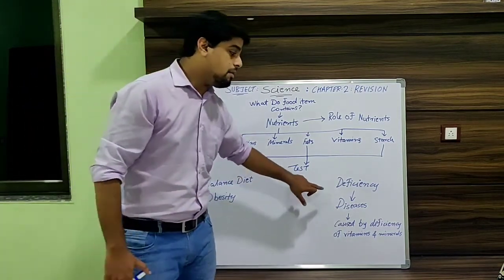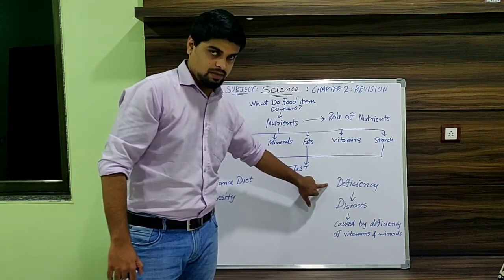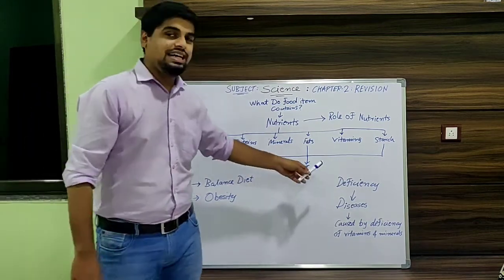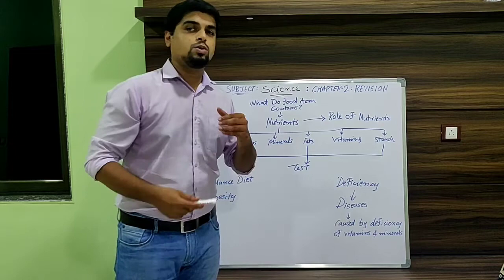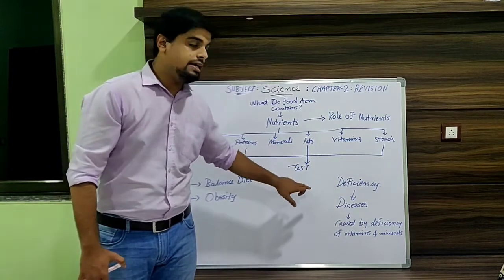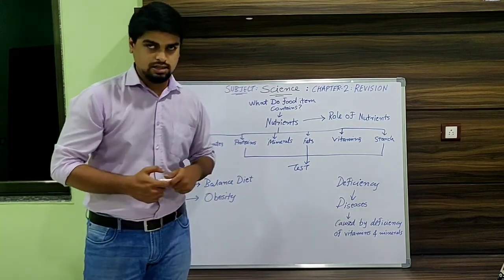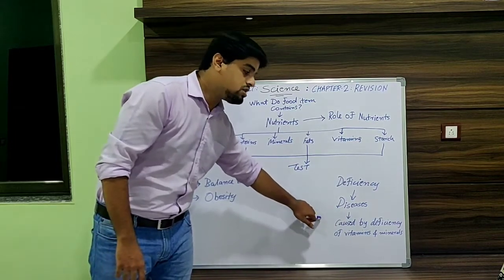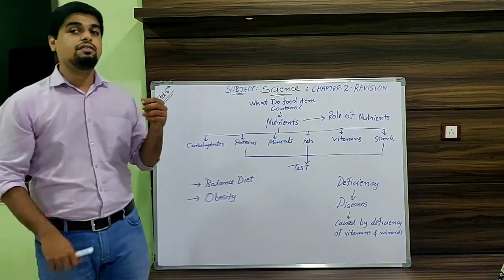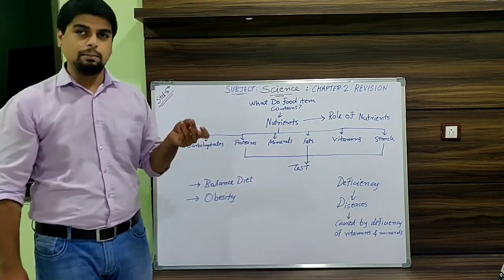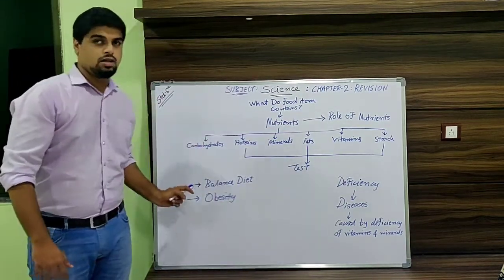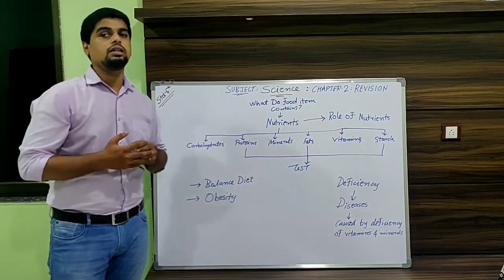Finally we learned about deficiency. If some nutrients are missing from food, that is known as deficiency. If this continues, some diseases occur due to this deficiency — those are known as deficiency diseases. We studied deficiency caused by vitamins and minerals, and different diseases such as scurvy, beriberi, and loss of vision. These are the topics we learned in chapter number 2.